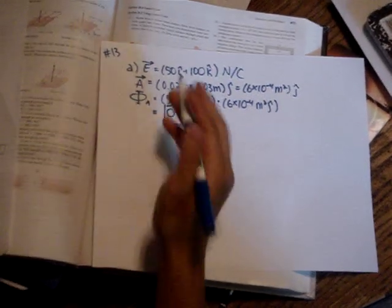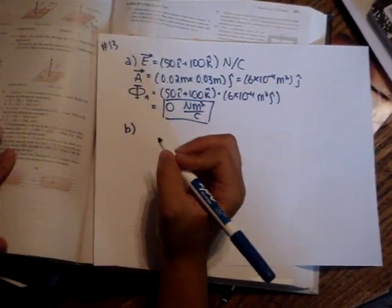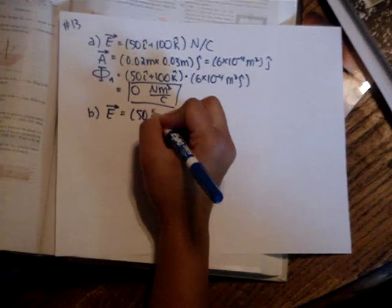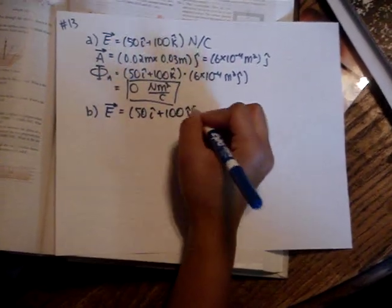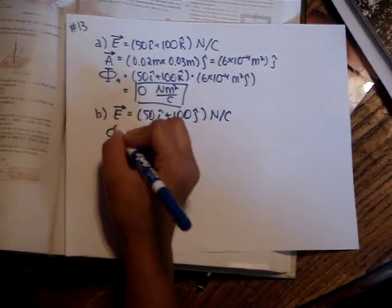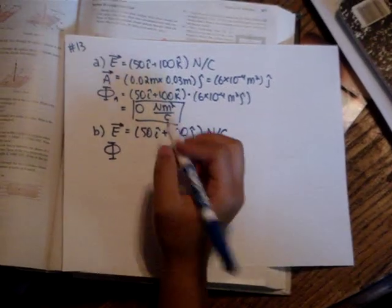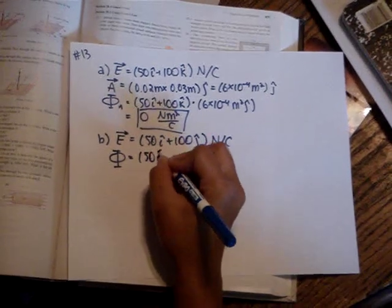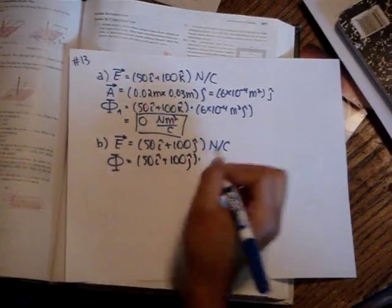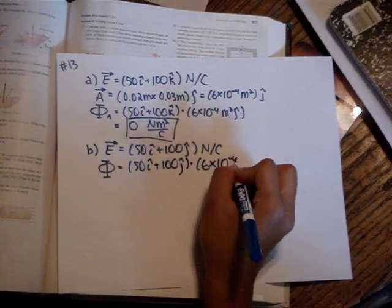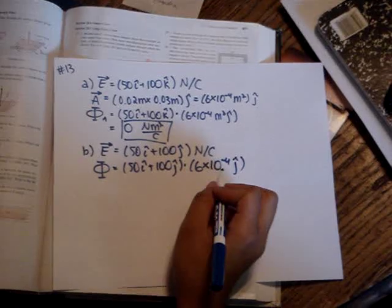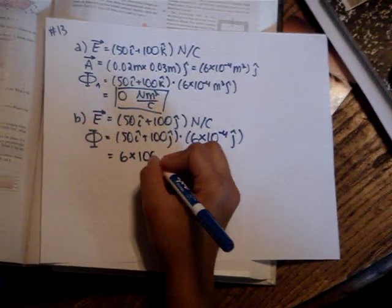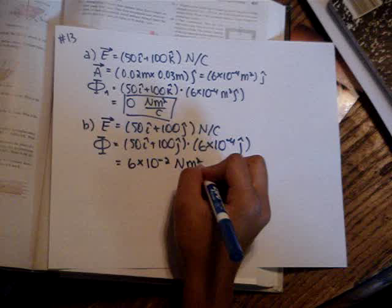And part b is asking for the electric flux if the electric field vector is 50i hat plus 100j hat newtons per coulomb. And again, you just want to find the dot product of the electric field vector and the area vector, which is this one up here. So you can write it out again. And now this time, there are two components that are in the j hat direction, so when you multiply them together, you'll get 6 times 10 to the negative 2 newton meters squared per coulomb.